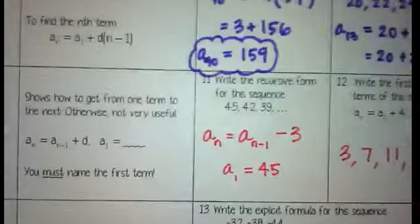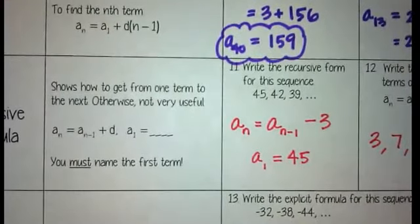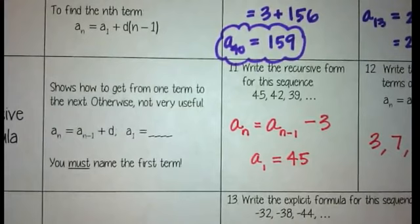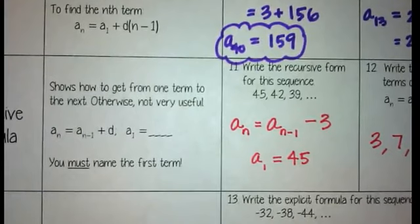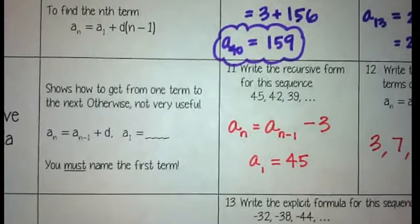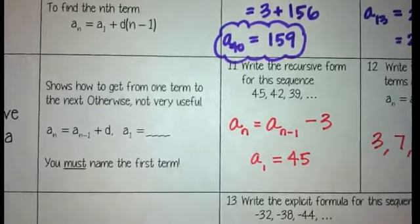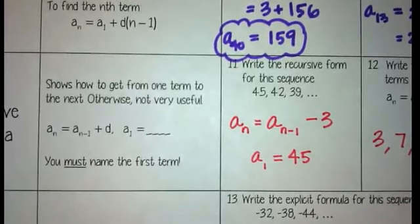The recursive form is not really very useful. It's very simple, but we don't do a lot with it. Because if we were asked to find the 30th term, we would need the 29th. But to find the 29th, we would need the 28th. But to find the 28th, we would need the 27th, and so on. So it's really just not useful in that sense.